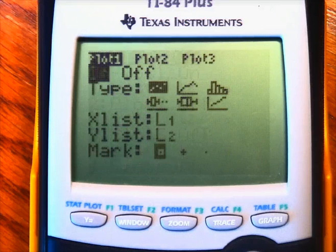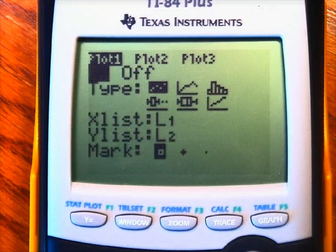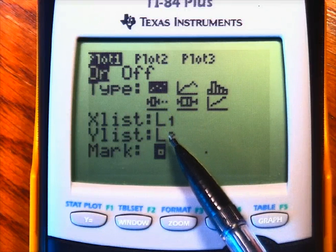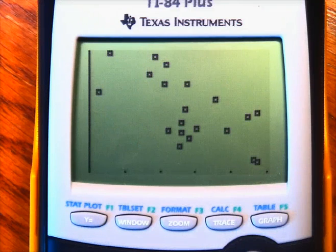So again, if you go into your stat plots, you want to turn on plot 1. Here is the scatter plot option for list 1 and list 2. I've already set my window, so here's my graph.